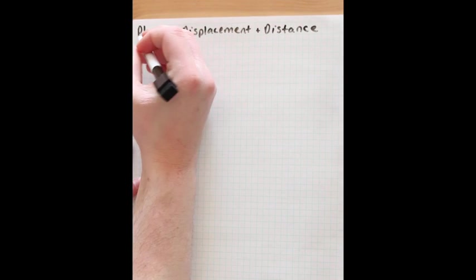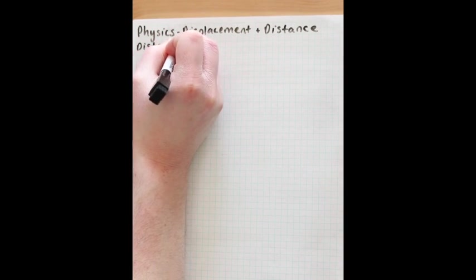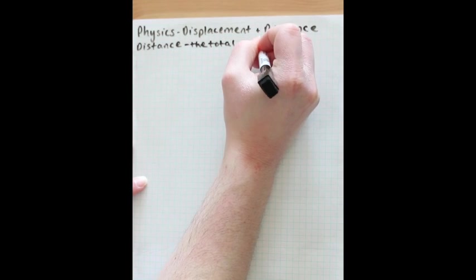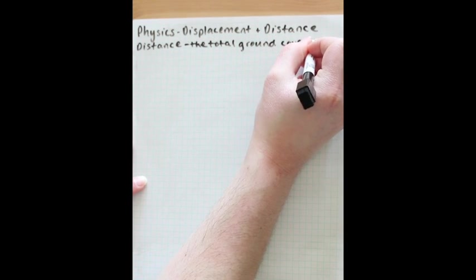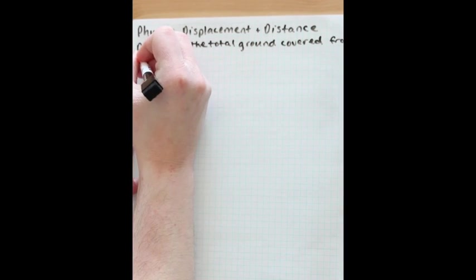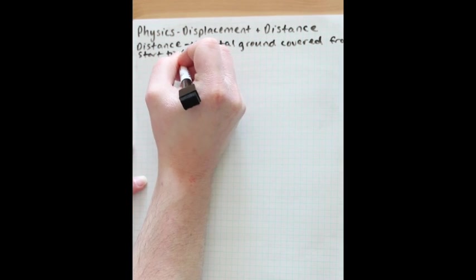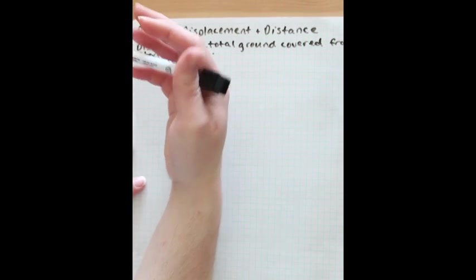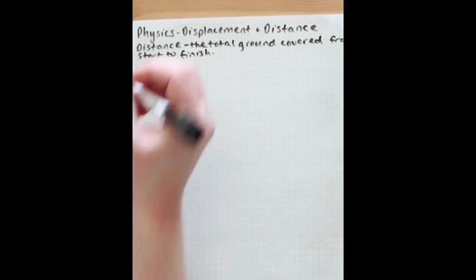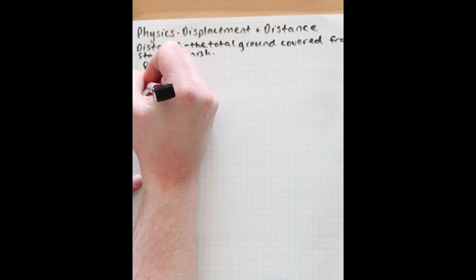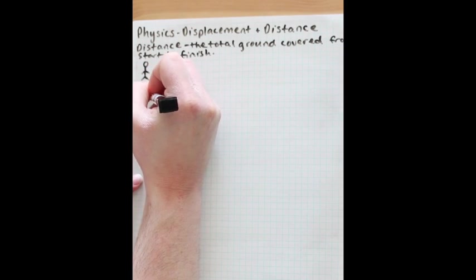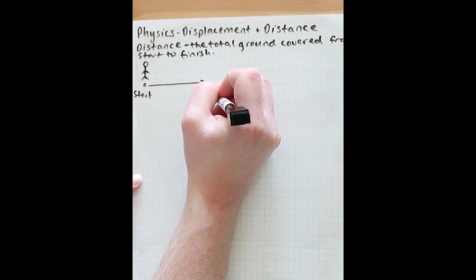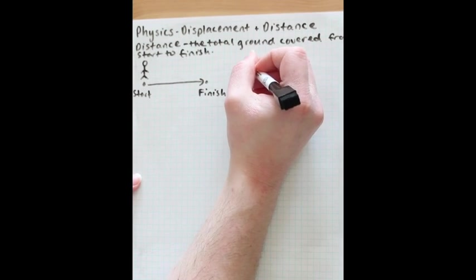So let's first think about distance. Distance is the total ground covered from start to finish. We're all pretty familiar with what distance is from different courses or other experiences. So if we think about a person who's walking — let's say they start at this point and walk in this direction until they get to this point, where they finish. We'll say one of these boxes is one meter.